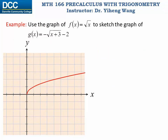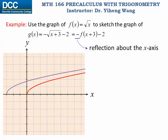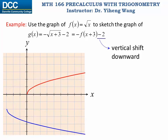Let's look at an example. We know the graph of the square root function f, and we need to sketch g(x) = -√(x+3) - 2. We can rewrite this as g = -f(x+3) - 2. The parentheses have higher priority, so first, (x+3) indicates a horizontal shift to the left by 3 units. Next, the negative sign indicates a vertical reflection about the x-axis. Finally, the minus 2 indicates a vertical shift downward by 2 units, completing the graph of g.